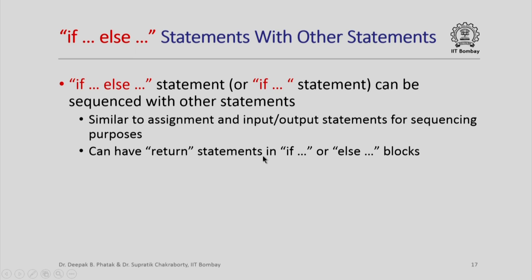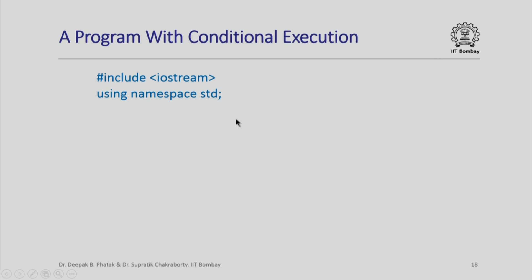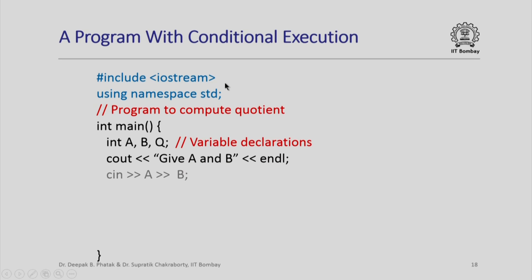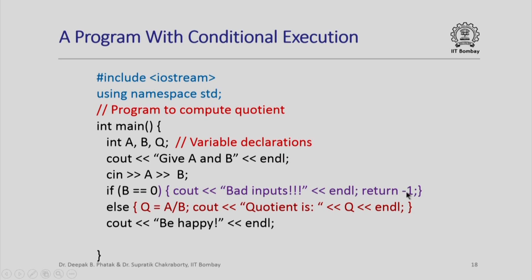We can also have return statements inside an if block or an else block. Here is a complete program solving the original problem: it includes compiler directives, comments, variable declarations, a message asking for values of a and b, reading a and b, and then an if-else. If b is 0, it outputs an error message and returns -1, indicating something bad happened. Otherwise it computes the quotient, outputs it, says "be happy", and returns 0, indicating to the caller that everything was fine.